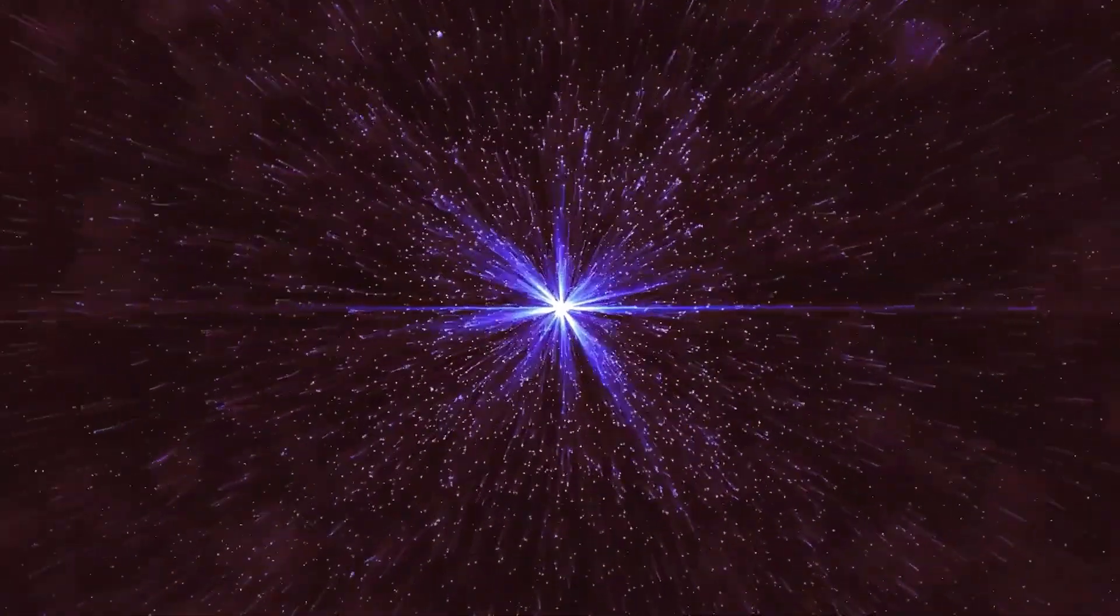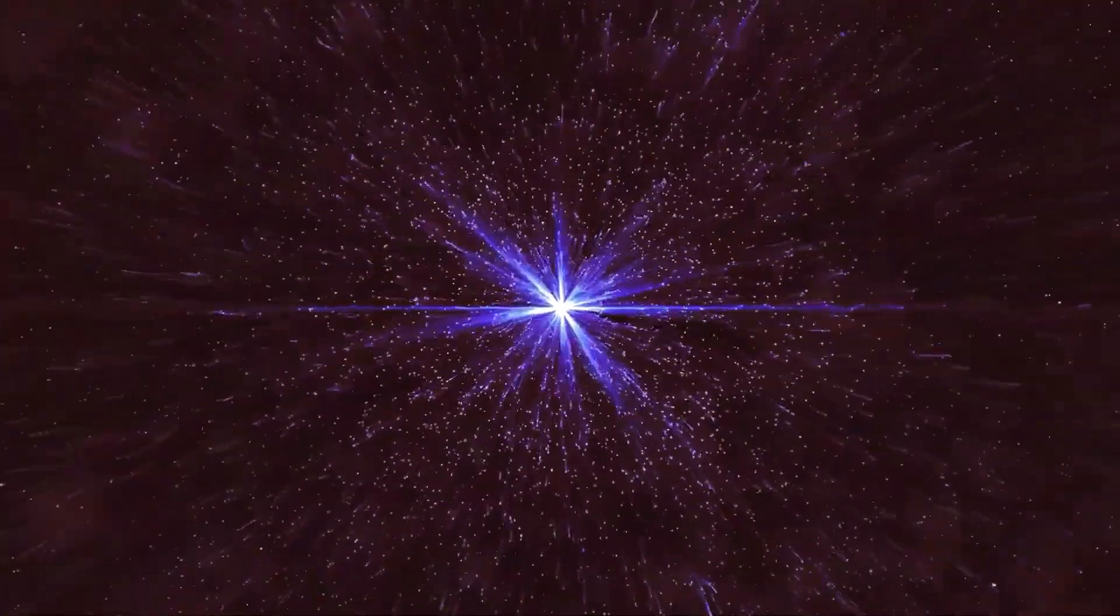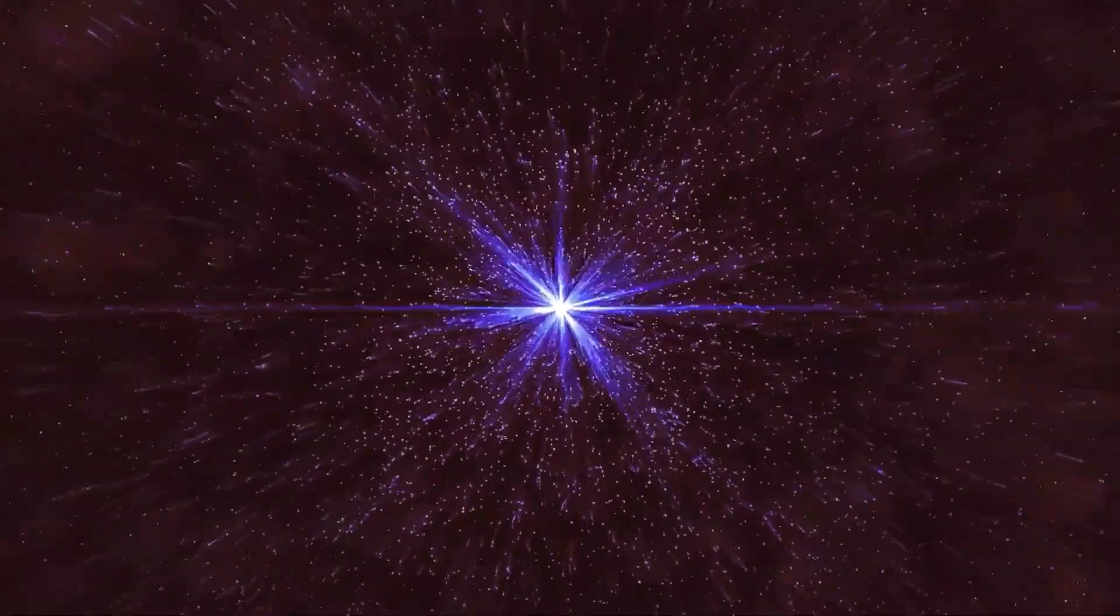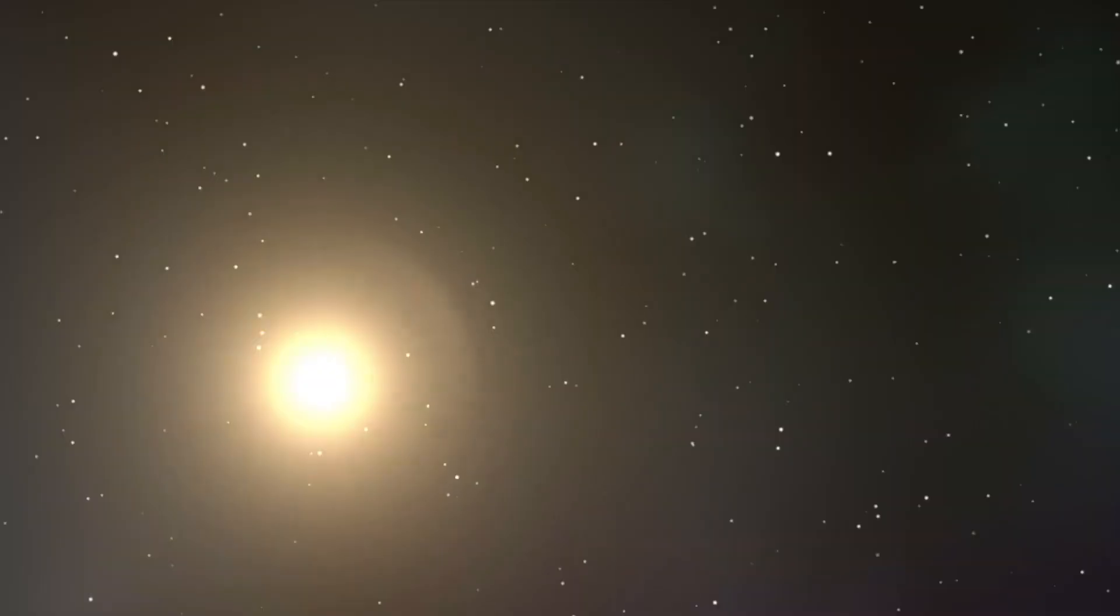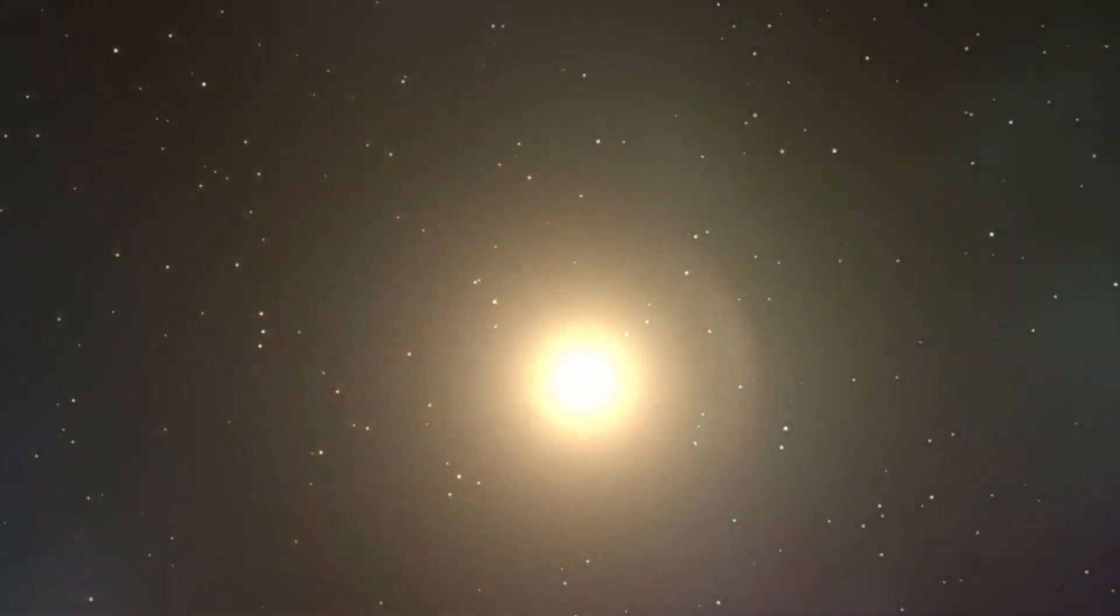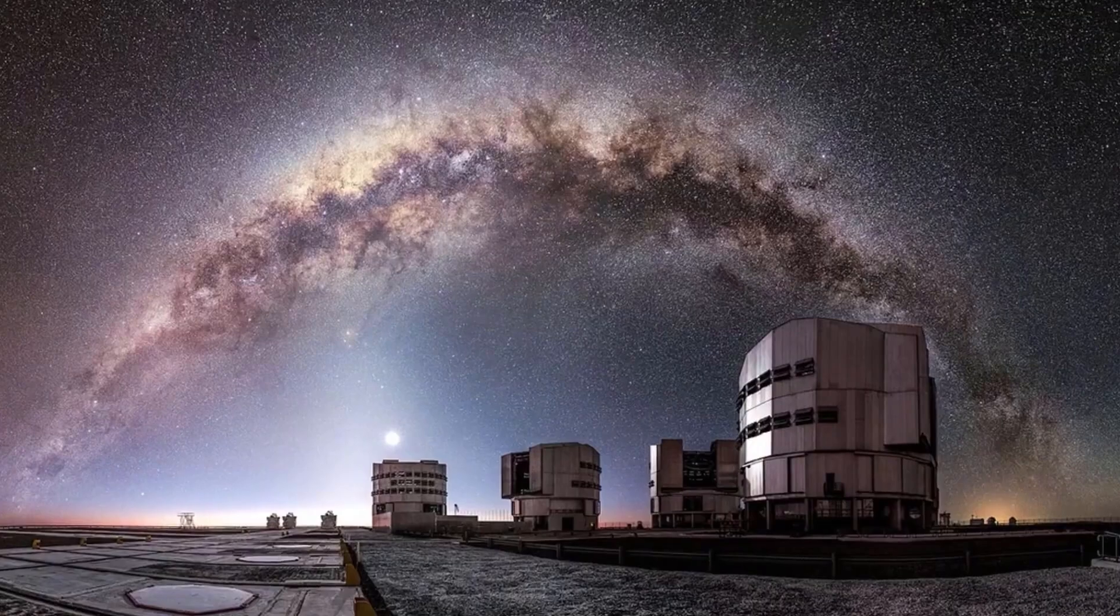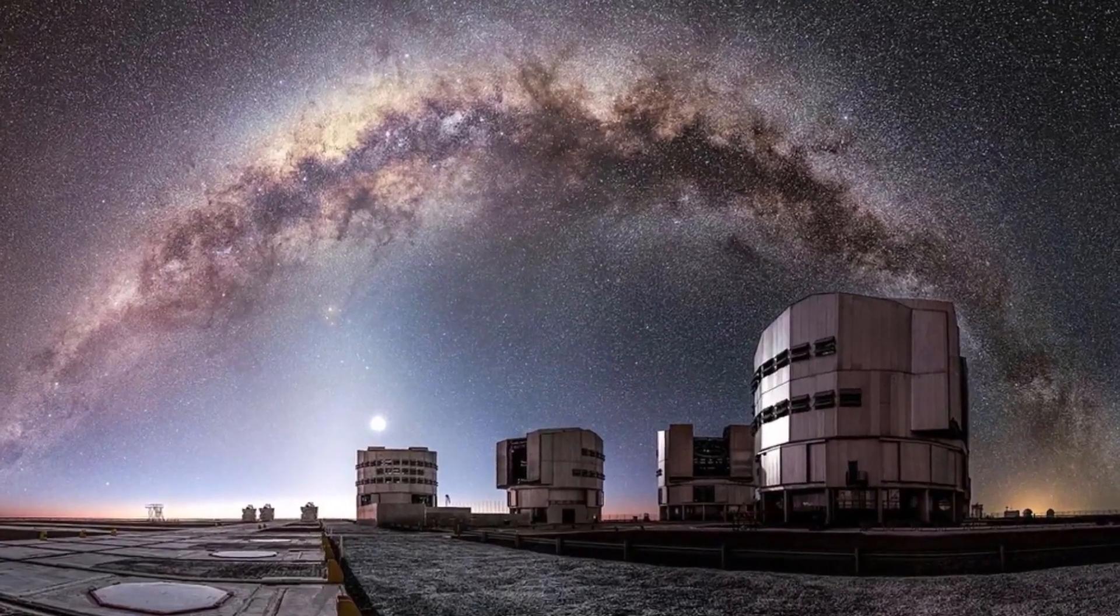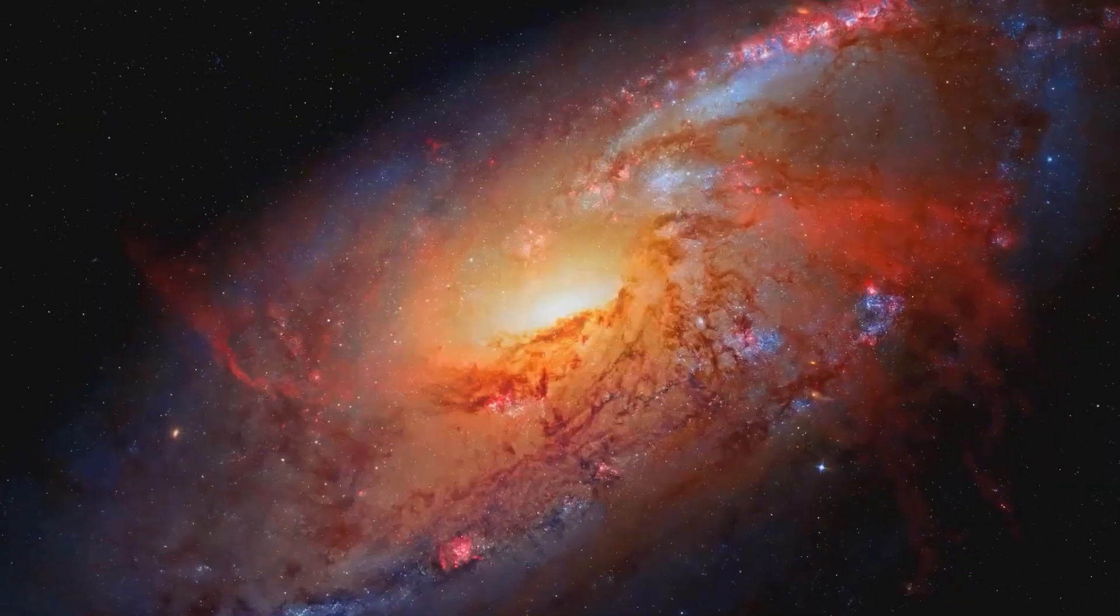Picture this. Enormous convective cells, bubbles of plasma the size of entire planets, rising and falling on the star's surface like boiling soup in a galactic cauldron. These aren't static images. They're dynamic snapshots of chaos, showing how the star's magnetic fields twist and tangle, flinging material into space at speeds that defy imagination.